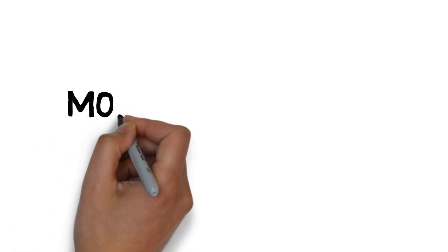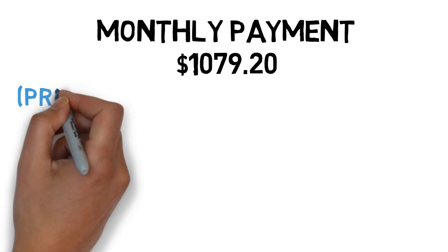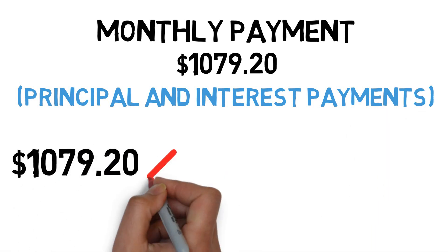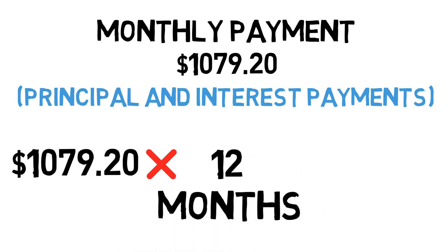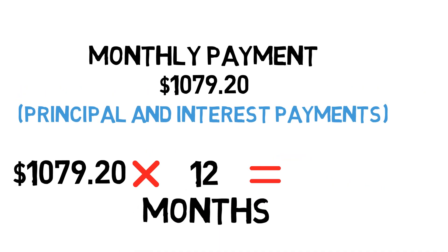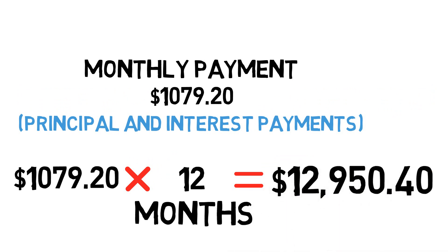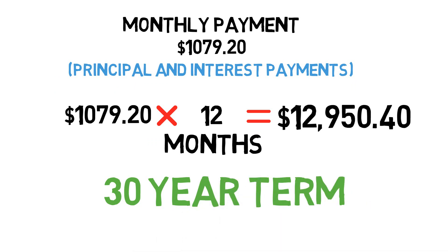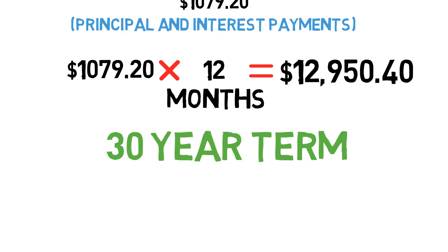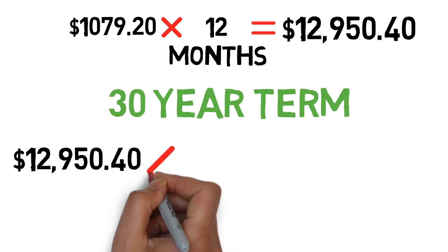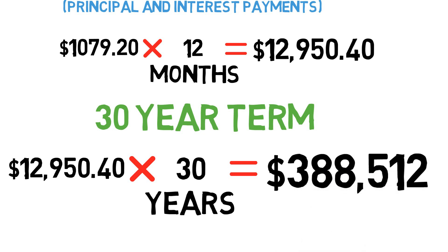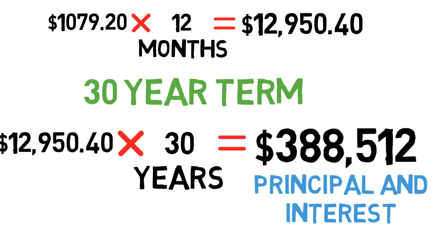Let's look at the monthly payment of $1,079.20, which represents the principal and interest payments. We take $1,079.20 times 12 months to find out how much we pay each year in principal and interest, giving us $12,950.40. Since this is a 30-year term, the borrower will pay that annual amount over 30 years. Taking $12,950.40 times 30 years gives us a total payback of principal and interest over the entire loan of $388,512.